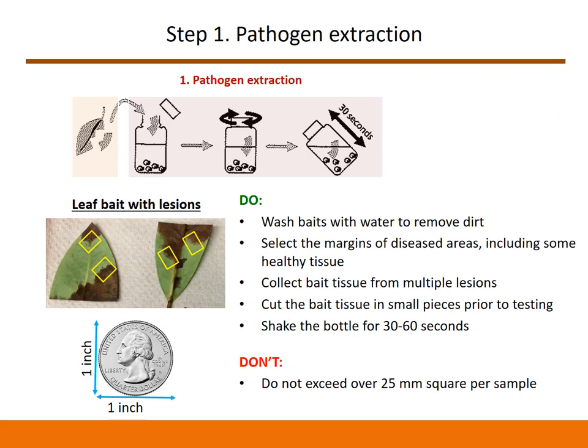While this kit can be used to test symptomatic leaves, roots and stem tissue, we are going to focus on testing leaf baits. It is a three-step process and these steps also apply to other tissue types. The first step is pathogen extraction. Make sure to collect from the edges of the diseased area as shown in the yellow boxes. Cut the bait tissue into small pieces. If you have two leaf baits from the same sample, use a small portion of bait tissue from both leaves. Make sure the bait tissue collected does not exceed 25 mm square, which is roughly equal to the size of a quarter. Once you add the bait tissue to the extraction buffer, close the lid tight and vigorously shake the bottle for 30 to 60 seconds to crush the tissue.